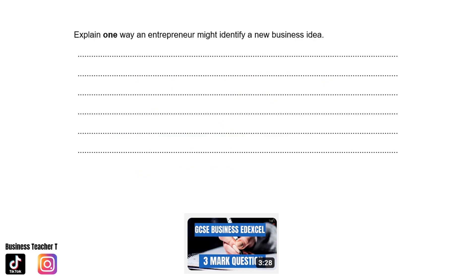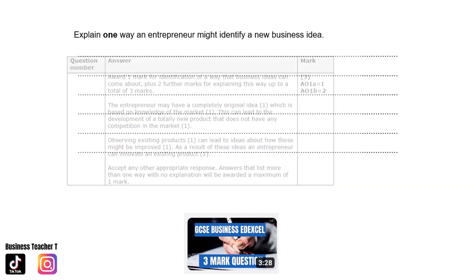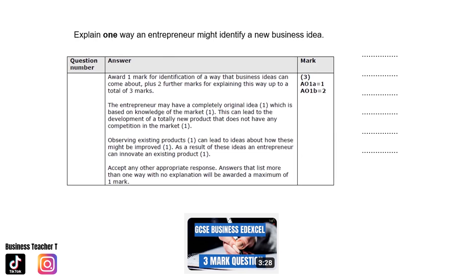Next question: explain one way an entrepreneur might identify a new business idea. This question is slightly different from the previous one which was about one reason. Pause the video and give it a go. The mark scheme: the entrepreneur may have a completely original idea based on knowledge of the market, which can lead to the development of a totally new product that does not have any competition. Or, observing existing products can lead to ideas about how these might be improved, so an entrepreneur can innovate an existing product.